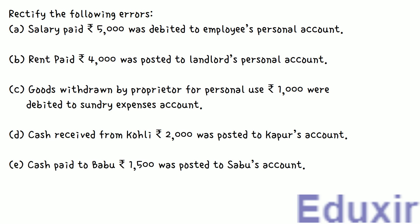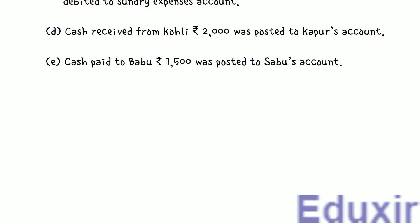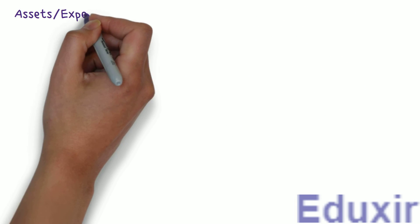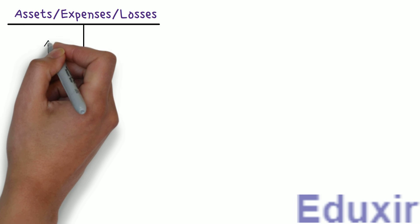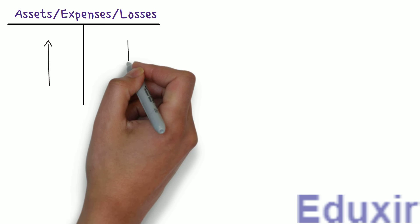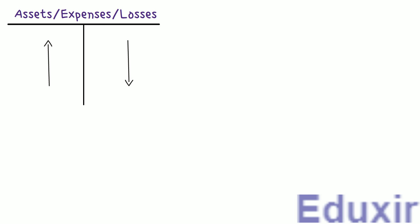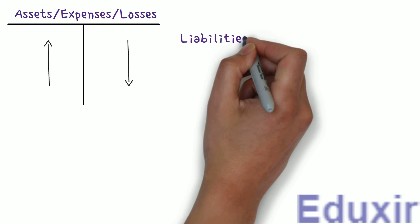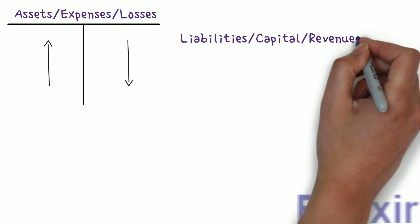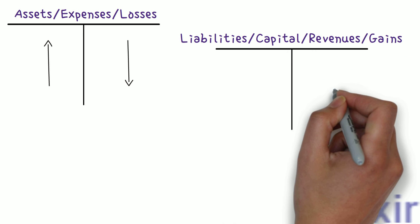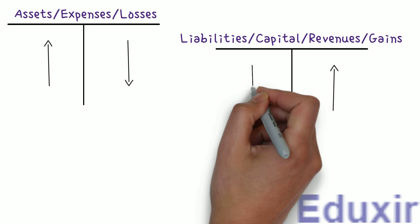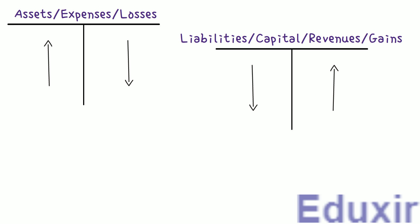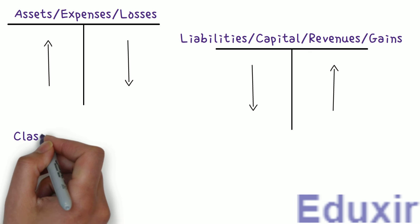Before we proceed with the analysis of these particulars, let us first do a small recap. In case of Assets, Expenses, or Losses, any increase should be debited and any decrease should be credited. Whereas in case of Liabilities, Capital, Revenues, or Gains, any increase should be credited and any decrease should be debited. Let us also do a quick recap about the classification of errors.